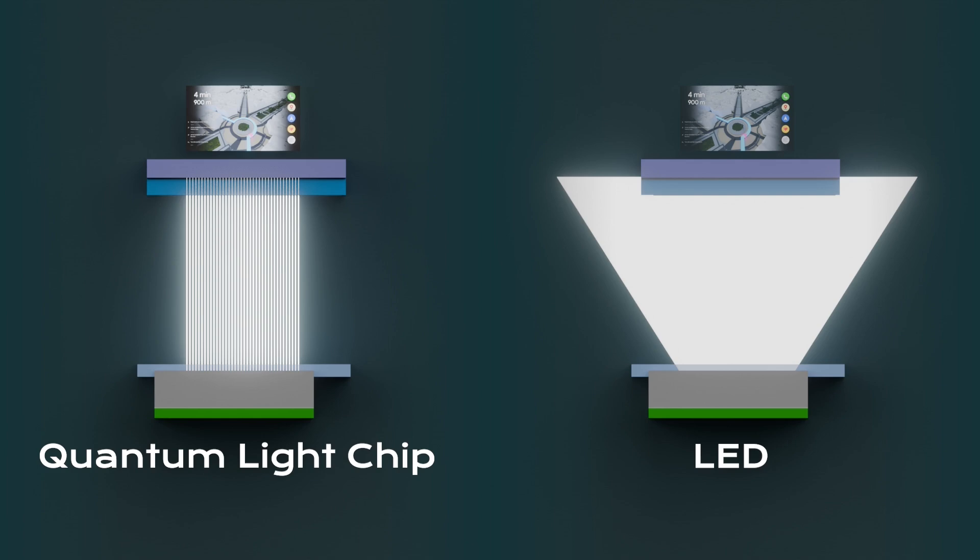In addition, laser light is already polarized while light from LEDs has to be polarized first, further reducing the brightness of the image.